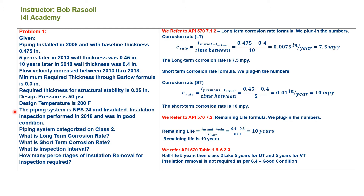Insulation inspection was performed in 2018 and was found in good condition. The piping system is categorized as Class 2. Questions: What is the long-term corrosion rate? What is the short-term corrosion rate? What is the inspection interval? How many percent of insulation removal for inspection is required?